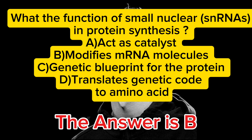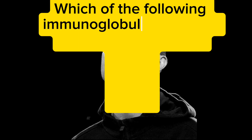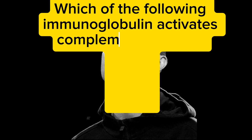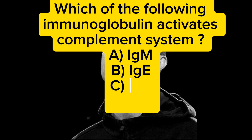Which of the following immunoglobulins activates the complement system? A) IgE, B) IgG, C) IgA, D) IgM. The answer is D — IgM.